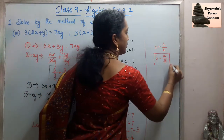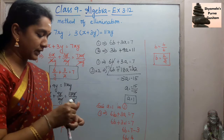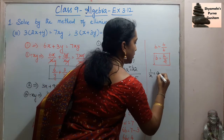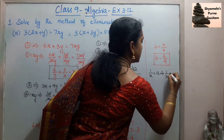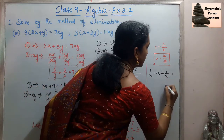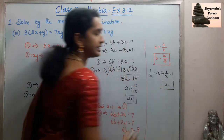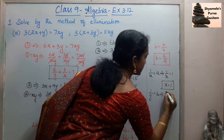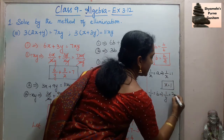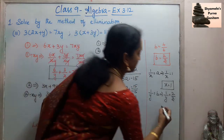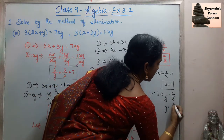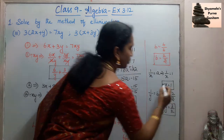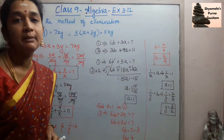We are not asked for a and b — we need x and y. Since we let 1/x = a = 1, cross-multiplying gives x = 1. Since 1/y = b = 2/3, cross-multiplying gives y = 3/2. Therefore x = 1 and y = 3/2.